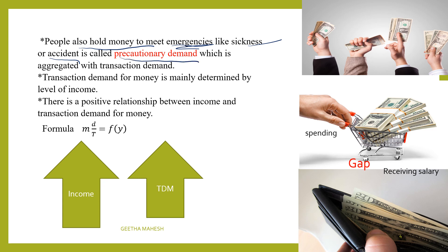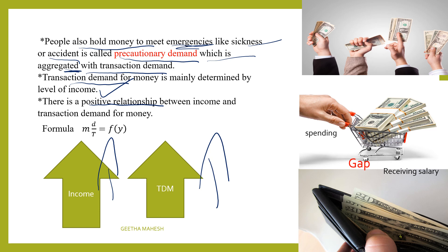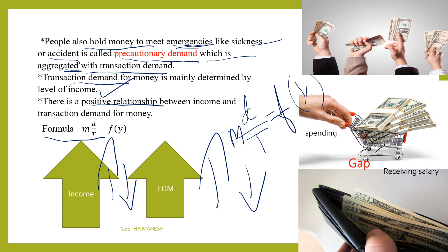Precautionary demand is aggregated with the transaction motive. Transaction demand for money depends on the level of income. If income is high, you hold more cash; if income is low, you hold less. The formula is: Transaction demand for money Lt = f(Y), a function of income.